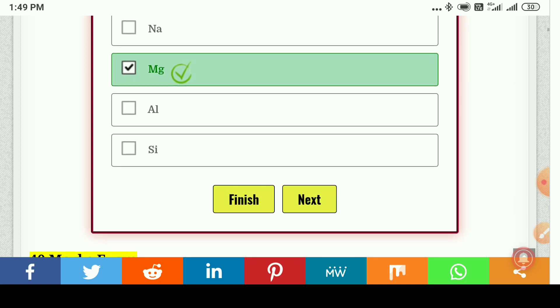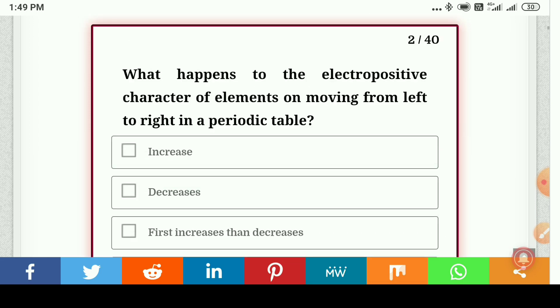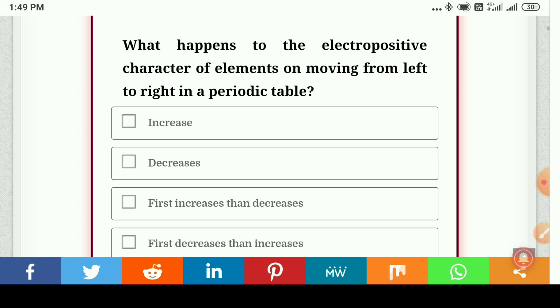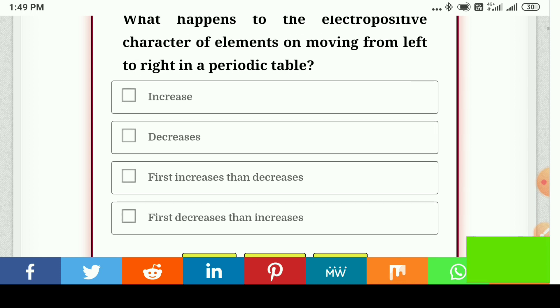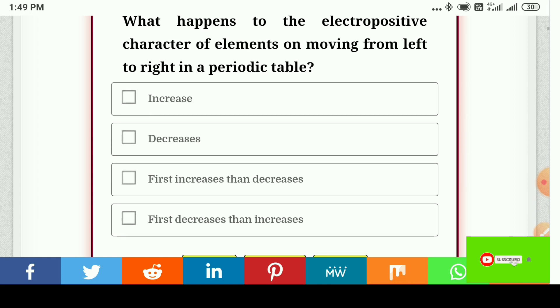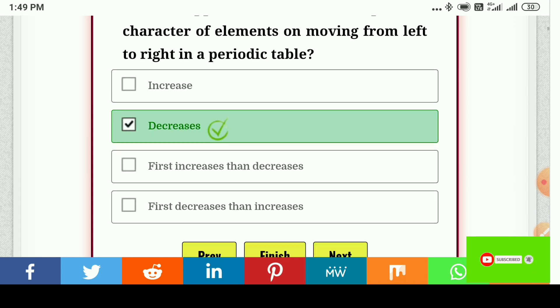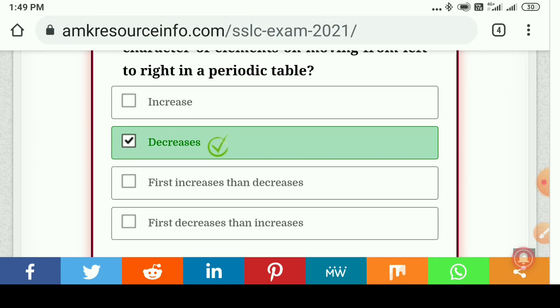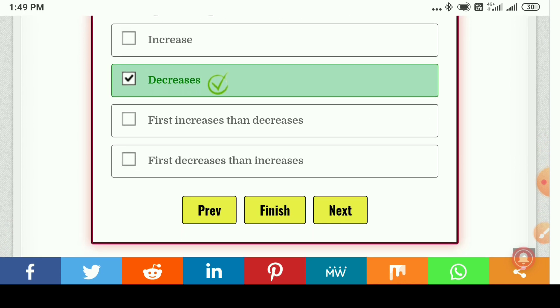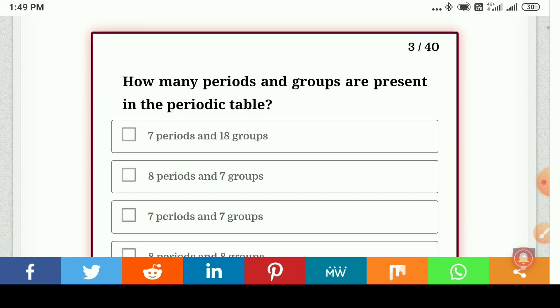What happens to the electropositive character of elements on moving from left to right in the periodic table? So here is the answer: decreases. I will only click the correct answers.